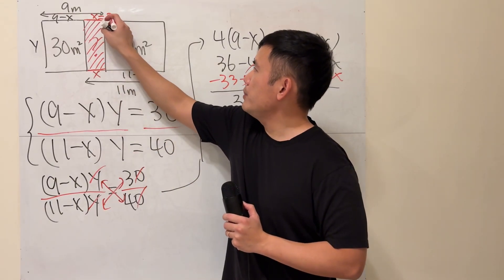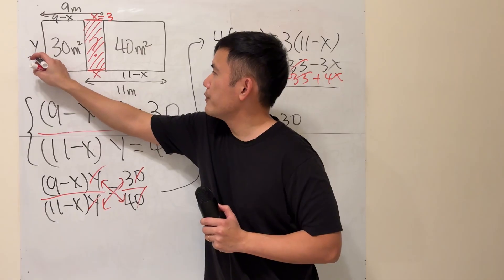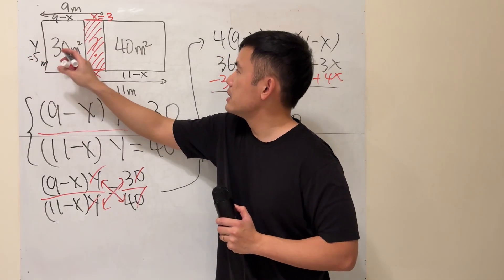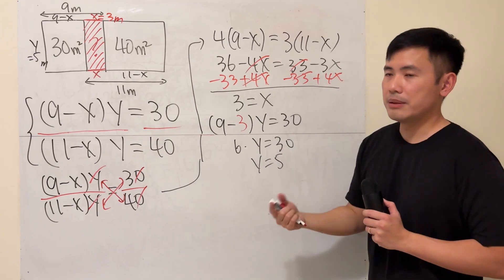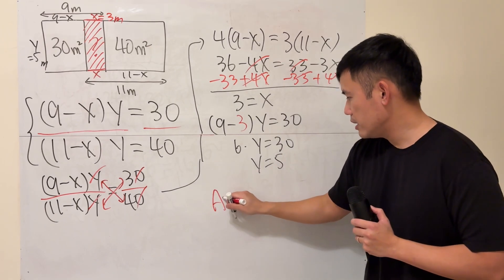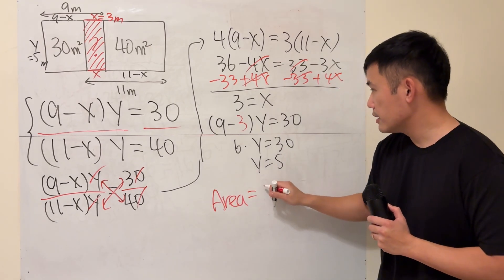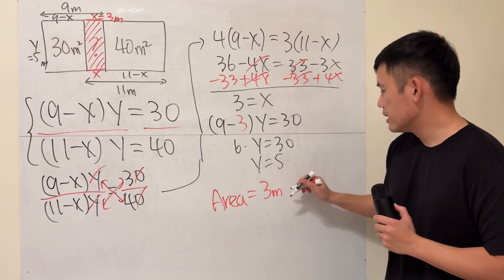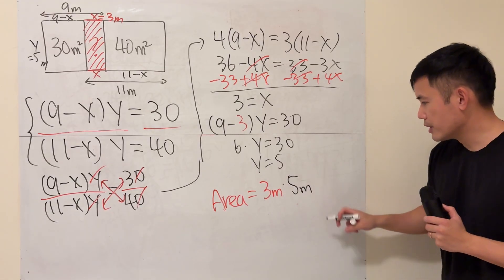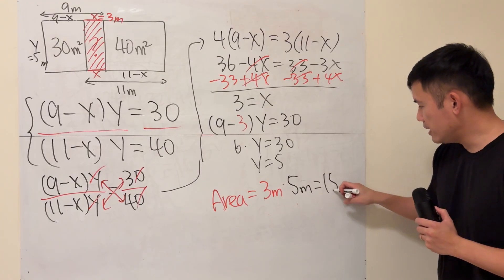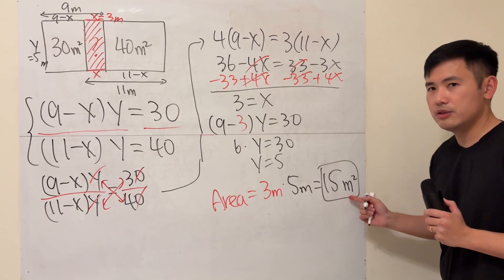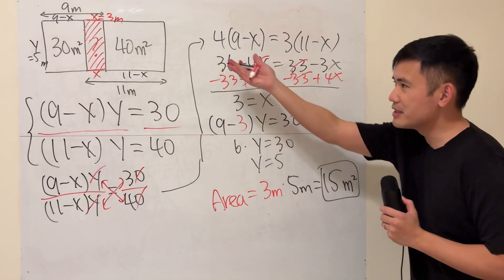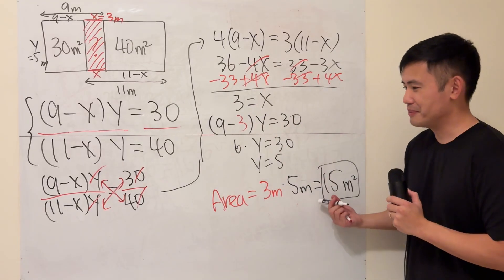So x equals 3 and y equals 5 meters. For this area, it's just going to be 3 times 5. So the area is 3 meters times 5 meters, which is 15 meters squared. When you say it, it should be 'square meters.' So the answer is 15, just like that.